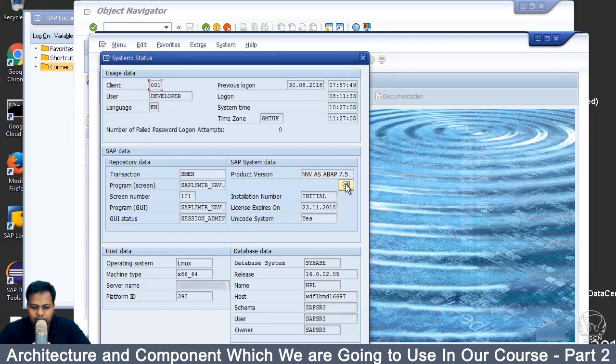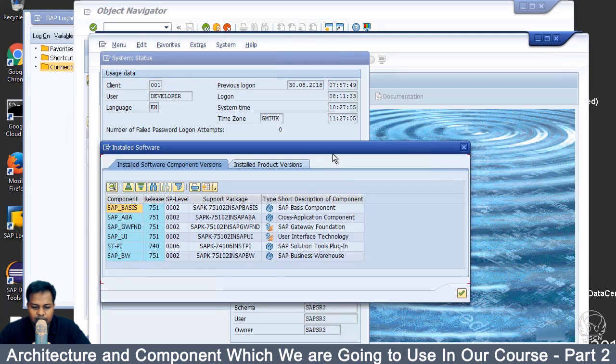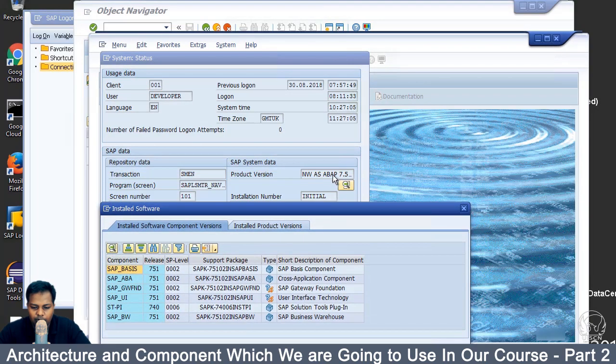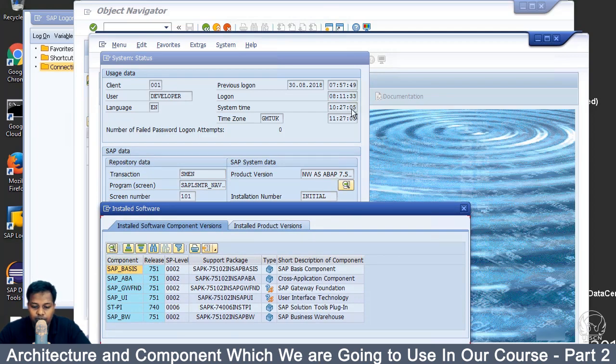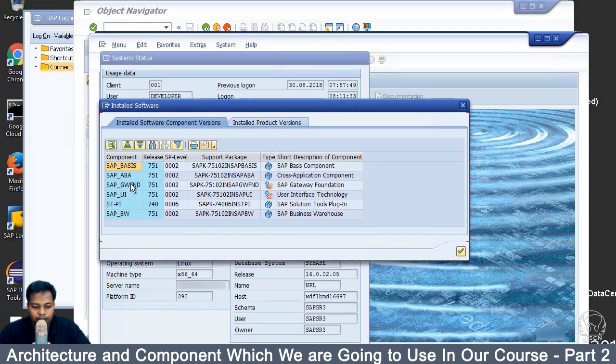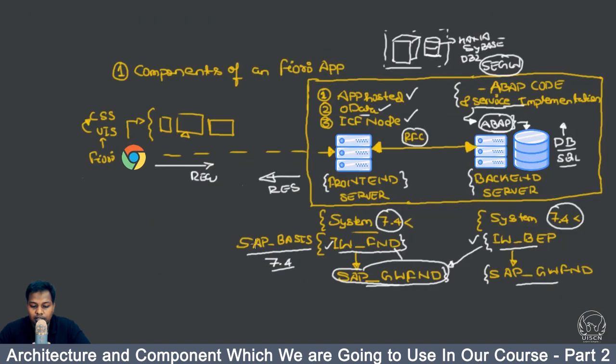we will be able to see the product version as 7.5, Netweaver as ABAP 7.5. So it's greater than 7.4 and what we will see here is SAP_GWFND. So this is the component name which has both the IW_FND and IW_BEP component.